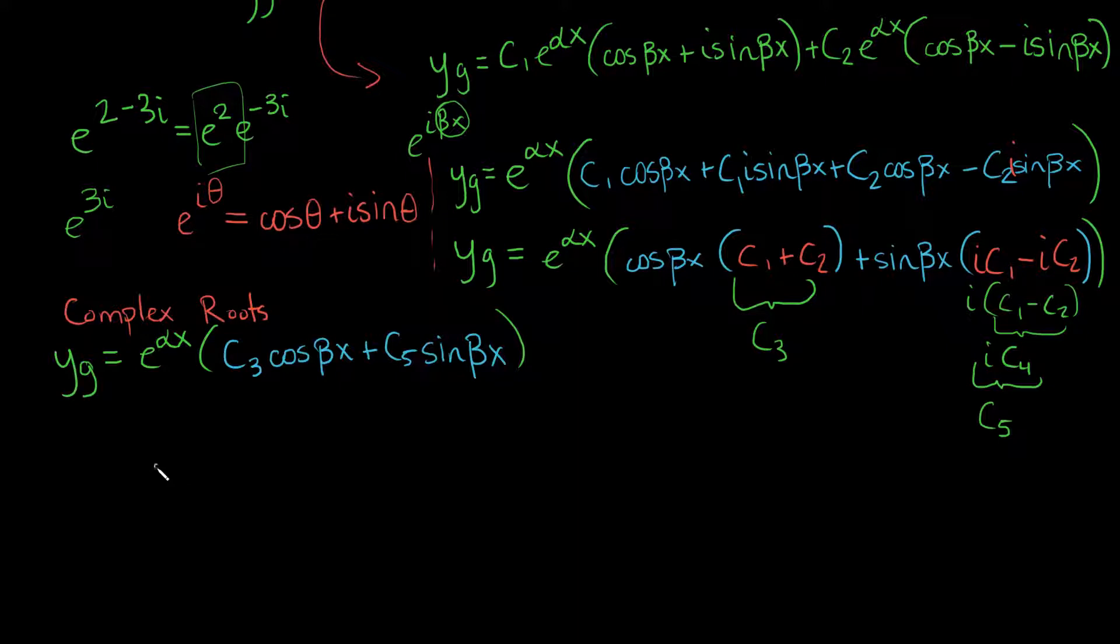In the case where we had two distinct roots, really what we had is that the general solution was just some constant times e to the first root times x, plus some other constant times e to the second root times x.